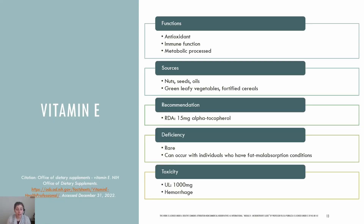Vitamin E is really a family of compounds that include eight chemical forms. Alpha-tocopherol is the only form that is recognized to meet human needs. Vitamin E acts as an antioxidant and is involved in immune function and other metabolic processes. The RDA for vitamin E is 15 mg for adult men and women. Sources include nuts, seeds, and vegetable oils as the highest, and also green leafy vegetables and fortified cereals. Deficiency of vitamin E is rare but can occur with individuals who have fat malabsorption conditions like Crohn's disease or cystic fibrosis. Although there is no concern for high amounts of vitamin E via foods, there is with supplementation. Toxicity of vitamin E can lead to hemorrhage and interfere with blood clotting. The UL is set at 1,000 mg for adults.